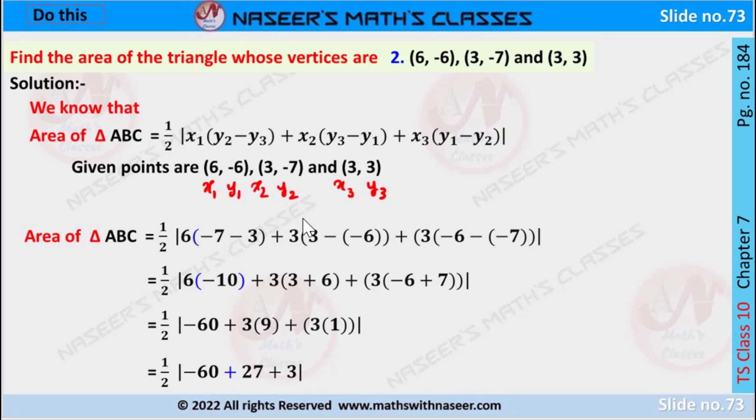Substituting these values in the formula, we can write area of triangle ABC equals 1/2 times the modulus of [6(-7 - 3) + 3(3 - (-6)) + 3(-6 - (-7))].